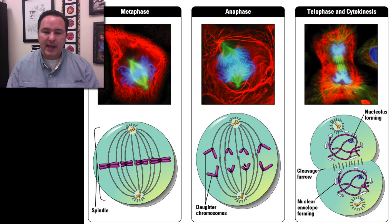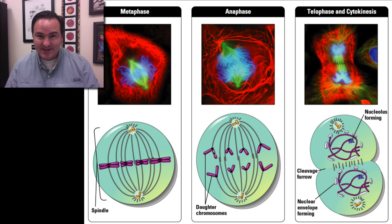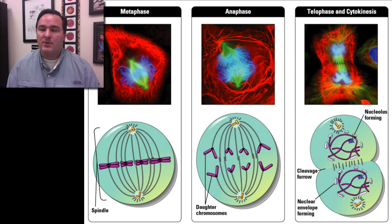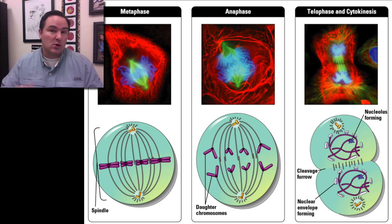And that's what happens in anaphase — the sister chromatids separate. At the moment that they separate, we can now refer to them not as sister chromatids but as daughter chromosomes, and now they're going to each side of the cell. You then have telophase and cytokinesis — you have that cleavage furrow, the nucleus forms again, the chromosomes become uncondensed, and then the cell goes back into interphase and does what it needs to do.